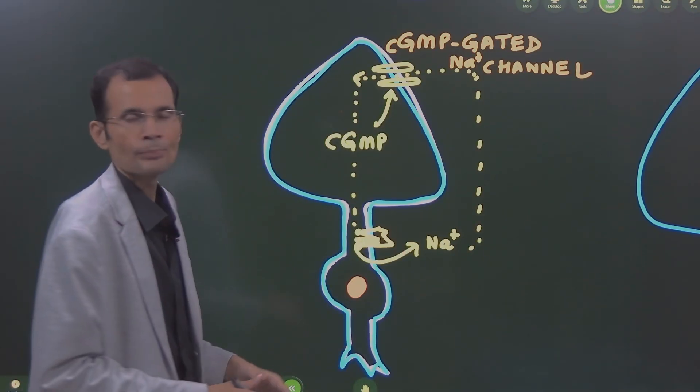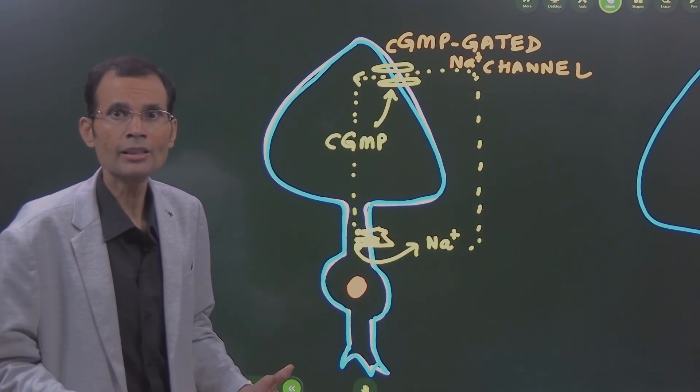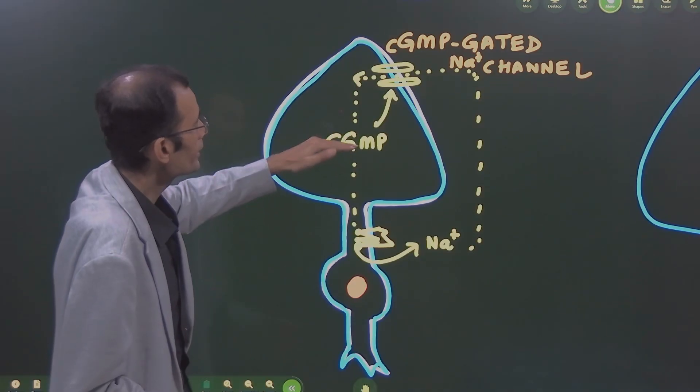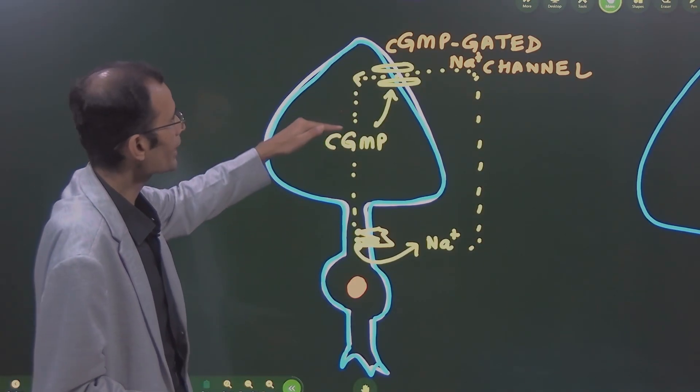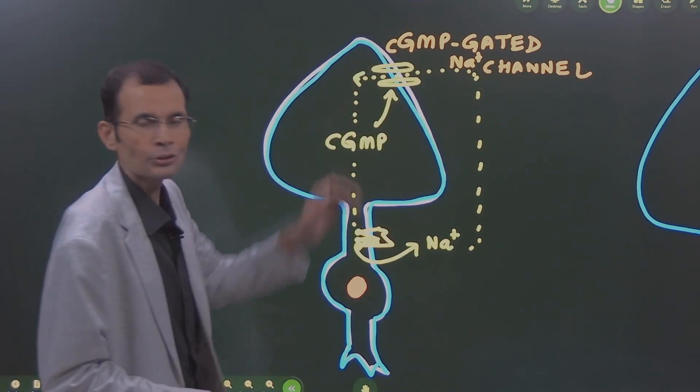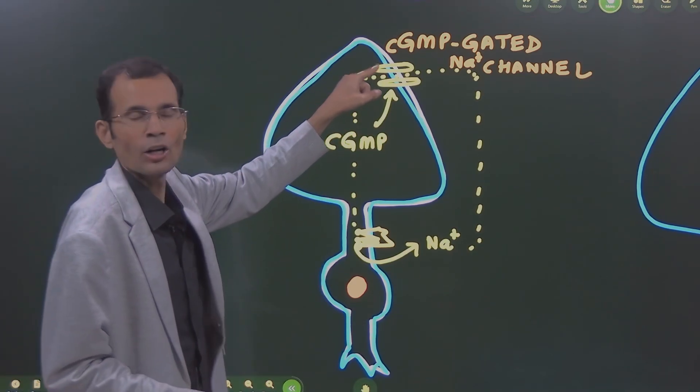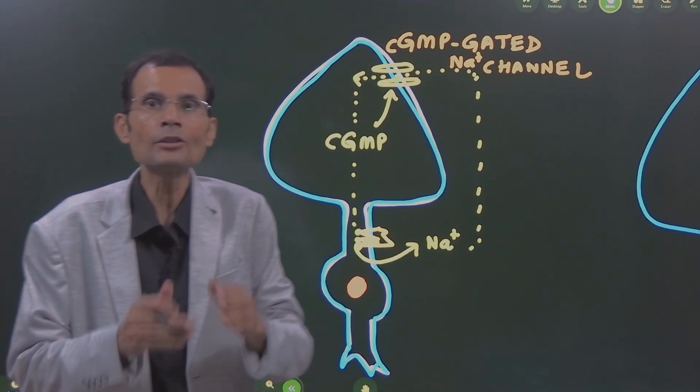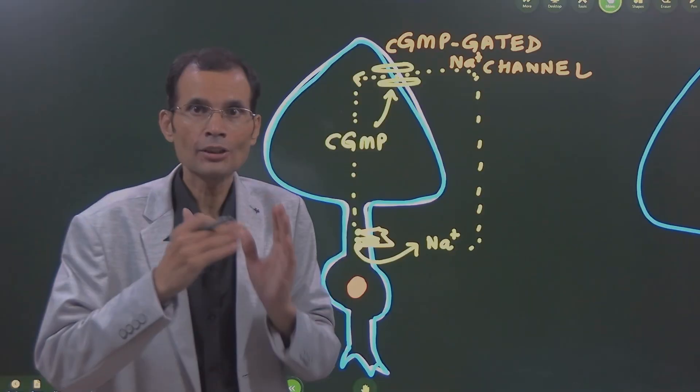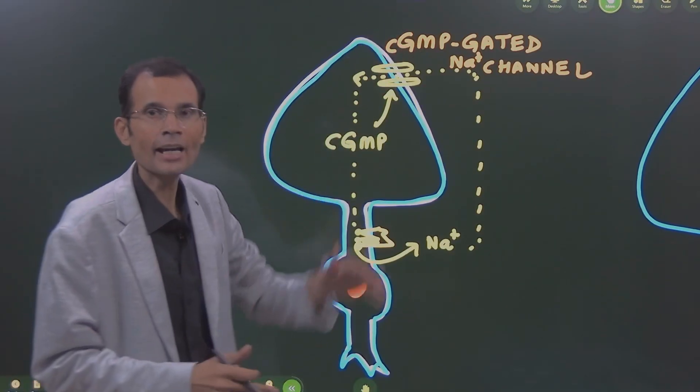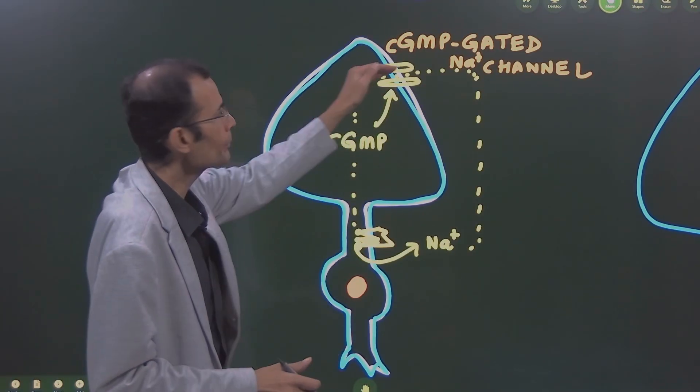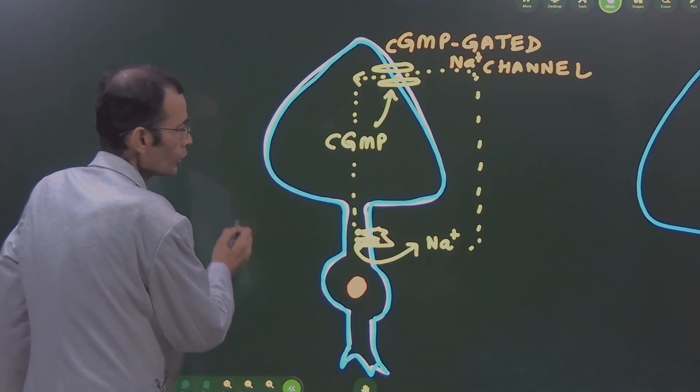In the outer segment, when light is not striking the rod or cone, the cyclic GMP inside the cone binds to the inner aspect of the channel and keeps it open. The channel is open because of cyclic GMP binding with the channel.